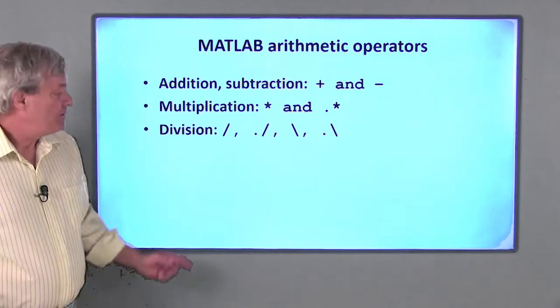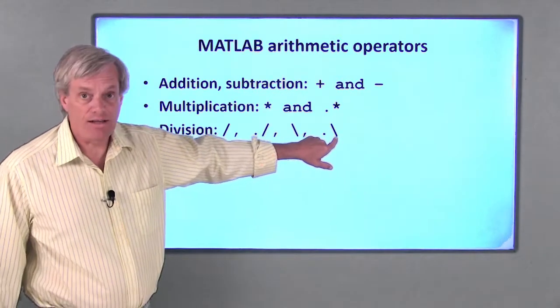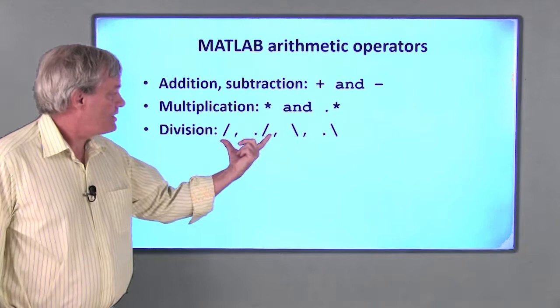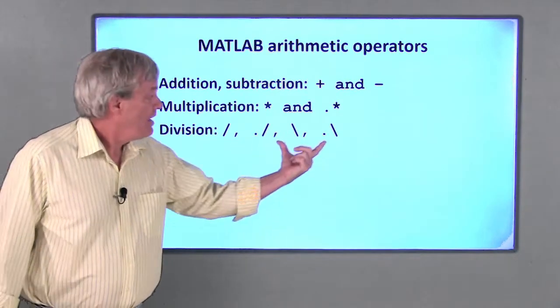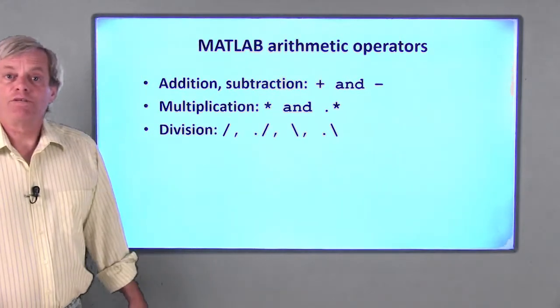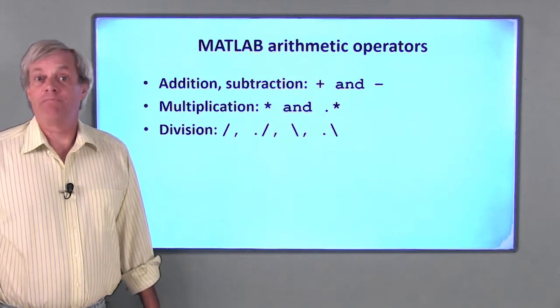MATLAB has four division operators: slash, dot slash, backslash, and dot backslash. If the values they operate on are scalars, slash does the same thing as dot slash, and backslash does the same thing as dot backslash. The difference between the forward and backward slash is simply which number is being divided by which.